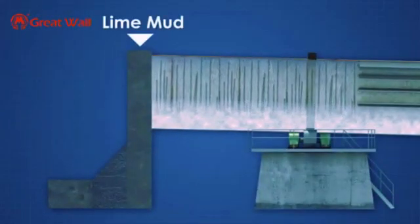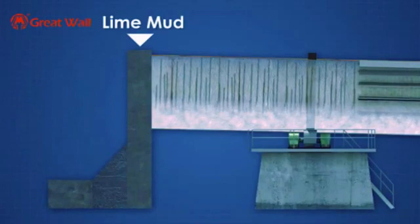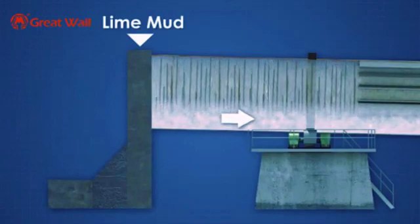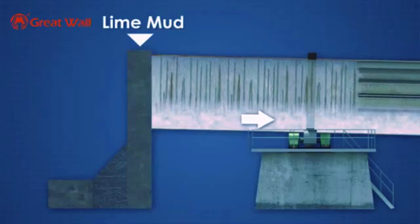Lime mud is continuously fed in at the higher end of the cylinder, and the rotation and incline of the kiln cause the mud to slowly move down toward the opposite end.